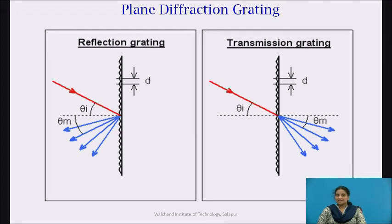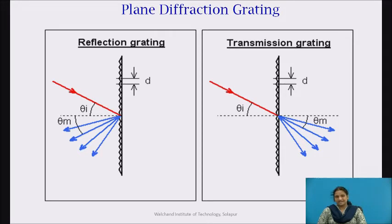A diffraction grating may work either in reflection or transmission, as shown here. In a transmission grating, the diffracted light is passed through at an angle equal to the diffraction angle. For reflective gratings, the light is first diffracted by the grating and then reflected by the coating at an angle equal to the diffraction angle. Both reflective and transmission gratings follow the diffraction grating equation.